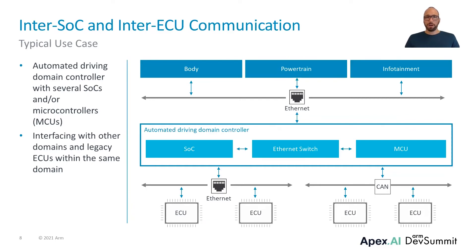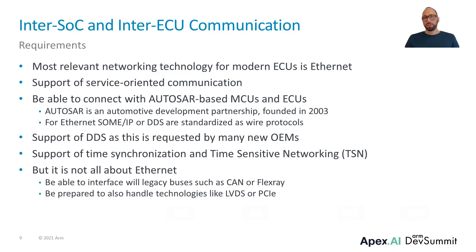The next communication layer is inter-SoC and inter-ECU. The Sense-Plan-Act pipeline we had as an example could run on an automated driving domain controller. Such a domain controller is often an ECU with several SoCs and microcontrollers. It is connected to other domains and sensors of its own domain, like LiDARs, cameras, or radars in our use case. We still have the traditional automotive buses like LIN and CAN, but the most relevant technology to connect SoCs and ECUs is now Ethernet. First-class Ethernet support is already the first requirement. One driver is the need for more flexible service-oriented communication, realized with protocols on top of the IP network stack. As many existing ECUs are based on AUTOSAR, it is important to support the wire protocols that are part of the AUTOSAR specification.